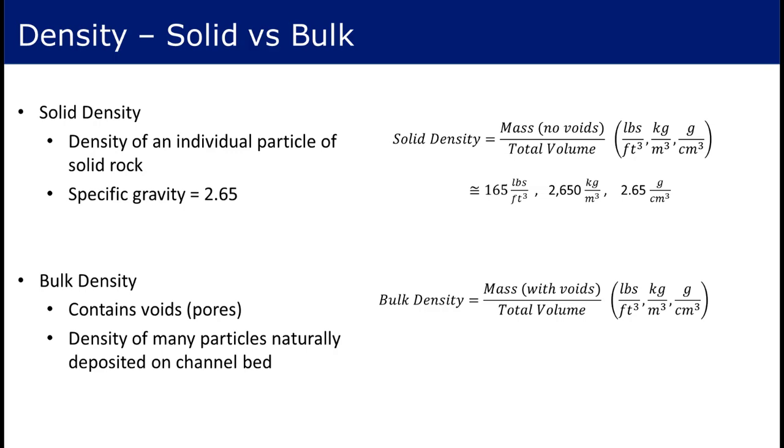In sediment modeling, bulk density dictates how much volume a given mass of sediment will take up as it is deposited on the channel bed or the volume removed as it is eroded and transported downstream. For non-cohesive sediment, a porosity of 0.4 results in a bulk density of around 100 pounds per cubic foot, or 1.6 grams per cubic centimeter, and is a value commonly used.